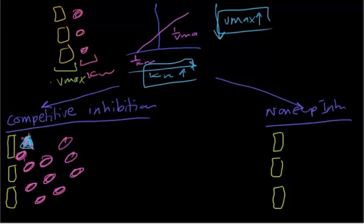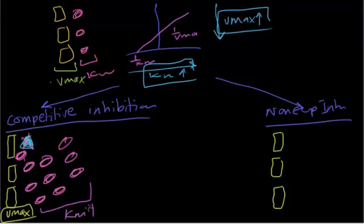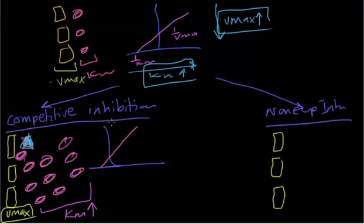As a result, the number of enzymes remains the same, so the Vmax remains the same — one, two, three enzymes in control, one, two, three in competitive inhibitors. However, we increased the number of substrates to get rid of the inhibitor, so the KM increases. You can now draw the curve: the Vmax does not change, but the KM increases, so the curve shifts — we call this the competitive inhibitor curve.